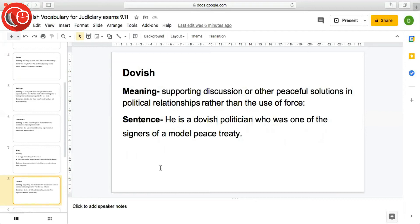The next word is dovish, meaning supporting discussion or other peaceful solutions in political relationships rather than the use of force. Wo log jo ki peaceful solutions ko support karte hain as compared to violent solutions, forceful solutions, that is called dovish. Sentence: He is a dovish politician who was one of the signers of the model peace treaty. Wo ek dovish politician hai, matlab a supporter of peace, person who always suggests peaceful solutions and he was also the one who signed the model peace treaty.